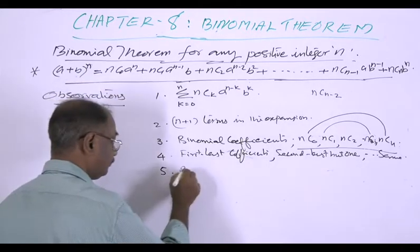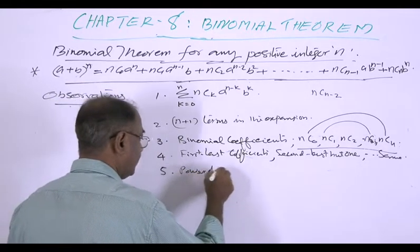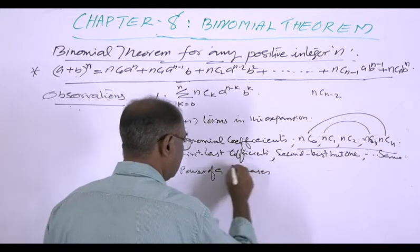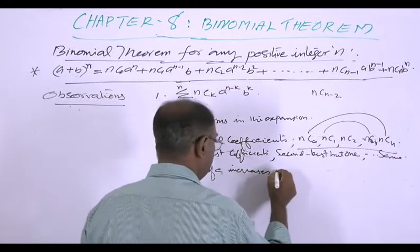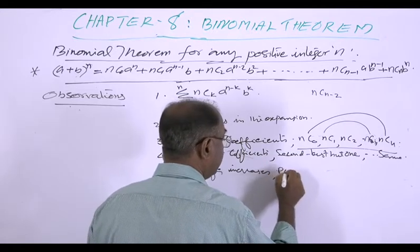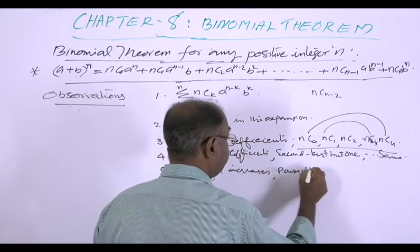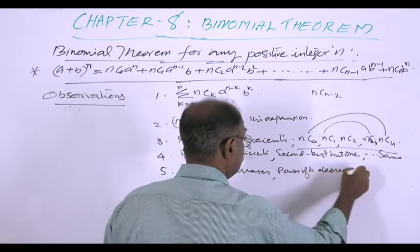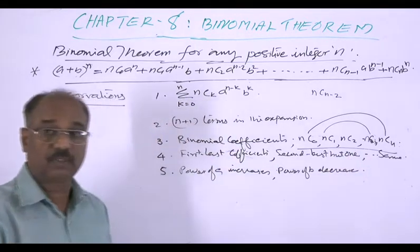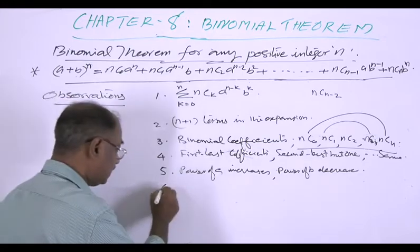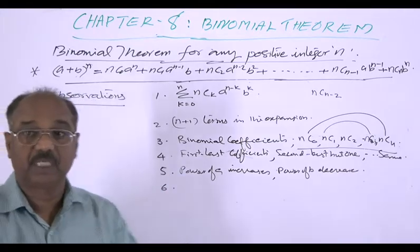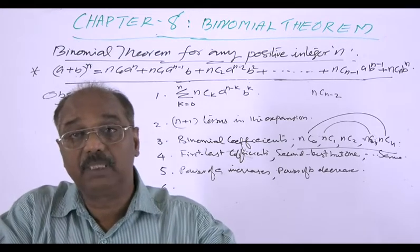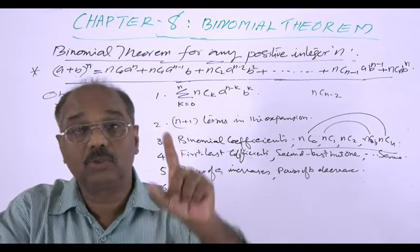So moving from left to right, the power of A decreases by 1 and the power of B increases by 1. The sixth observation is that the sum of the powers of A and B in each term is equal to n.